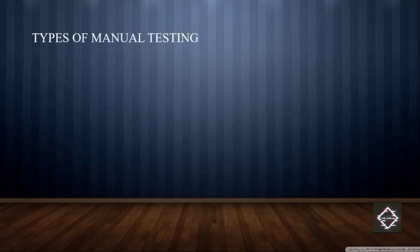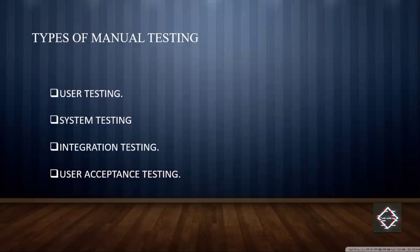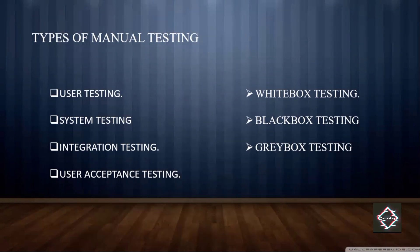The most important types of manual testing are: unit testing, system testing, integration testing, and user acceptance testing. There is also white box testing, black box testing, and gray box testing. These three — white box, black box, and gray box — are also involved in the types of manual testing, and I'll explain each individually.